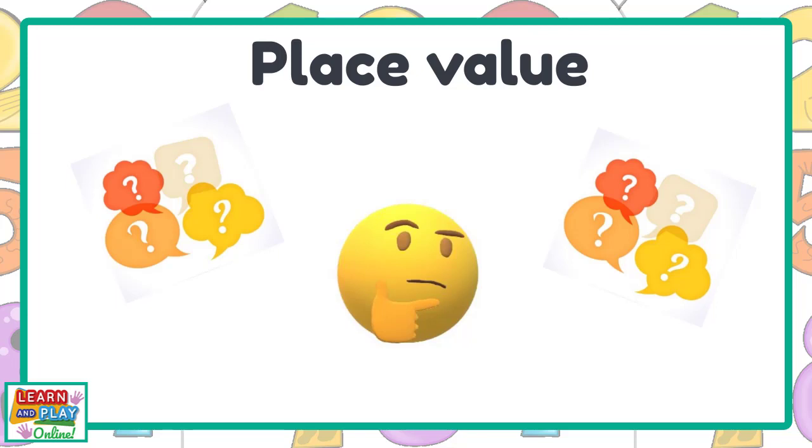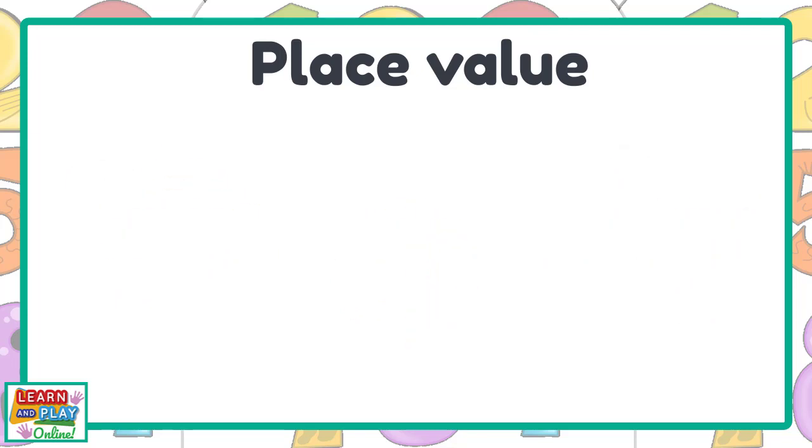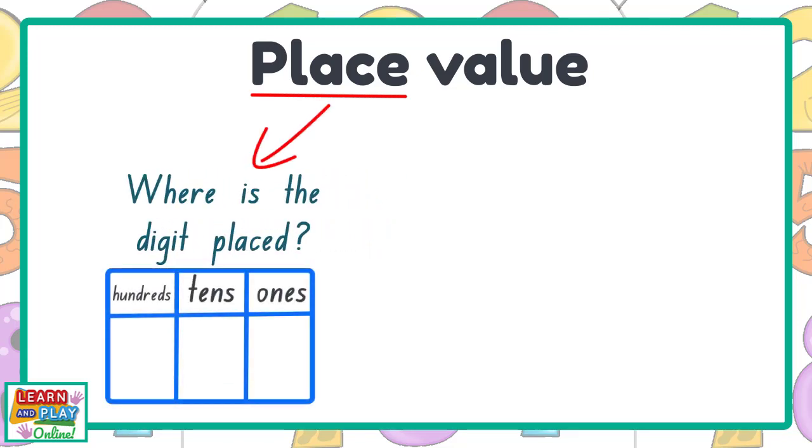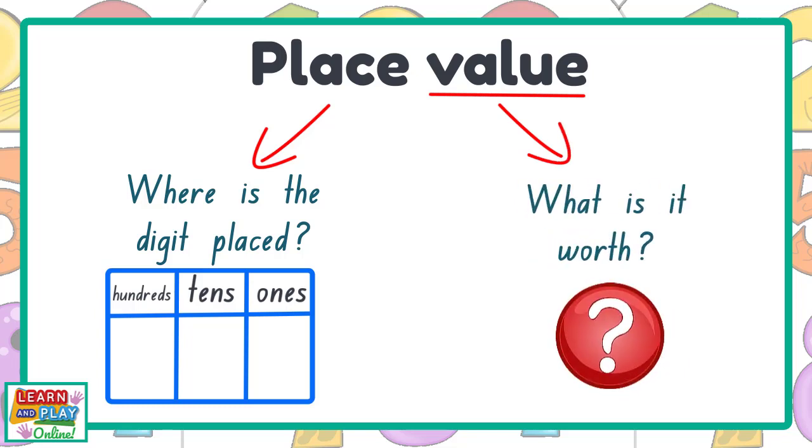Let's think about the words separately. When we are talking about numbers, the word place means a particular position or location. So to help us understand the concept, we need to look at where the digit has been placed. When we think about the word value, we are thinking about what it is worth. This will all make sense as we give examples later in the video.